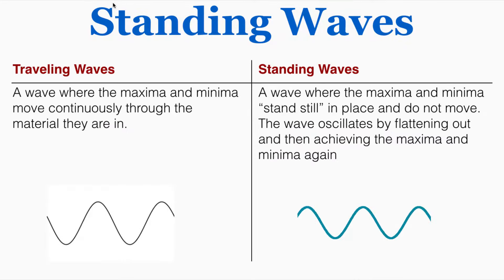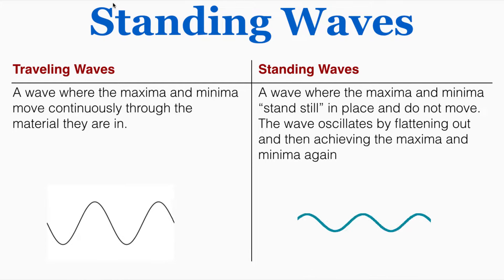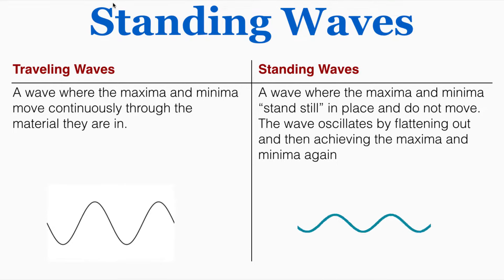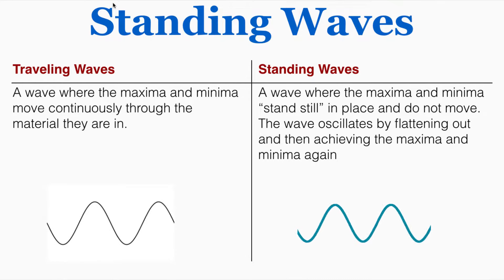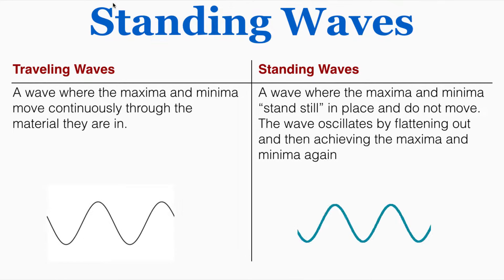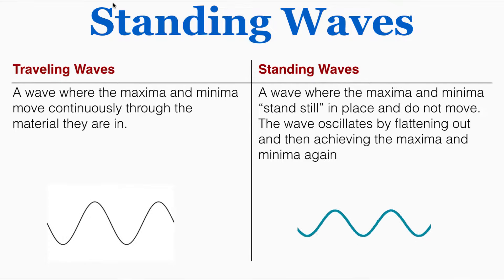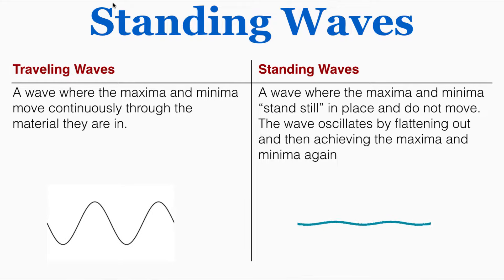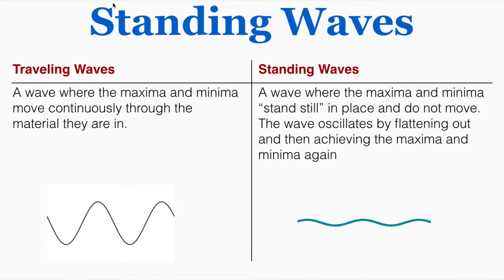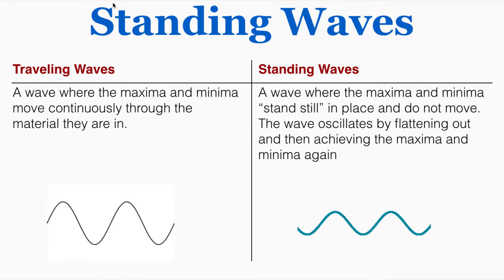This lecture is about standing wave patterns in physics. So far all of the waves we've talked about have been traveling waves. A traveling wave is a wave where the maxima and minima move continuously through the material they're in. Any one point in the material will oscillate completely as the wave moves through it — there's no part of the material that doesn't oscillate.